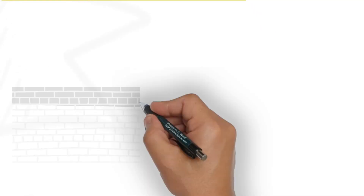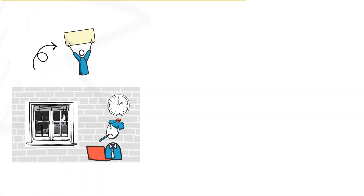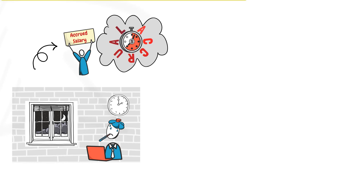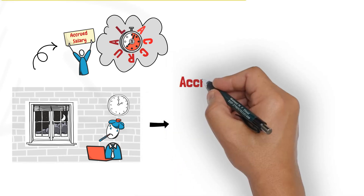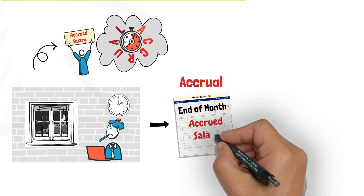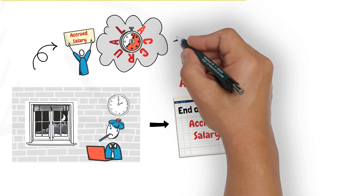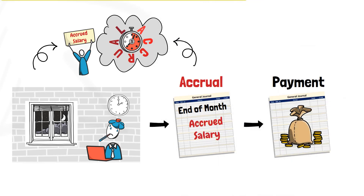An employee comes to work every day for his company, and as he keeps working, the salary expense keeps accruing to the employee. At the month end, an adjusting entry is made to recognize the salary expense that accrued to the employee during the month, then the payment of this salary is recorded later when it is paid.